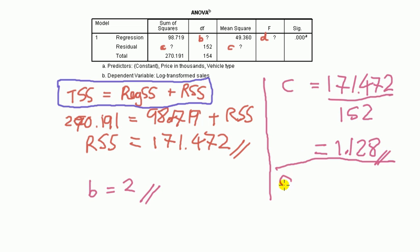Finally, D. D, which is just the F, standing for the F-test. Now, D is equal to, this is always the case for this regression, the mean square for the regression divided by the mean square for the residual. So, it's going to be 49.36 divided by 1.128. So, it's about 43.8.